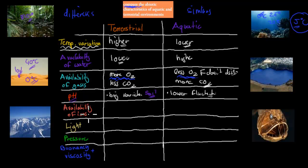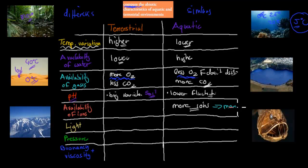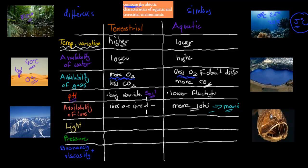The availability of ions relates to salt and similar substances. We're going to have many more ions in our aquatic environments — especially marine. Fresh water doesn't have that much, but marine environments are all about salt, so there are lots more ions, especially sodium chloride, in our oceans. On land, terrestrial environments do have ions in soils, but overall they're fewer compared to aquatic, especially marine aquatic environments.